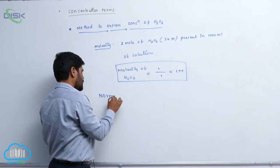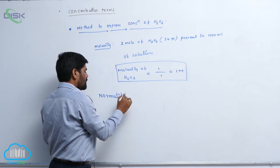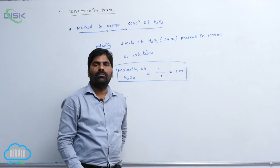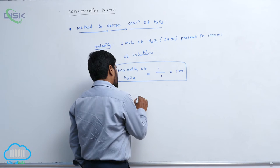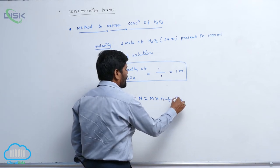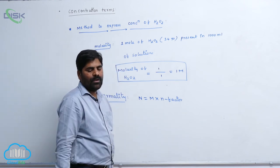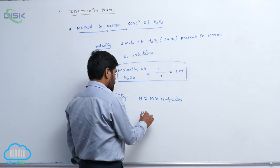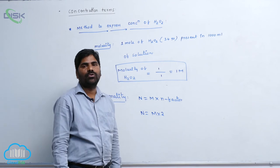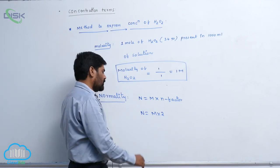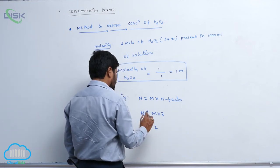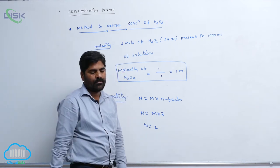The next one is normality. Normality equals molarity multiplied by the n-factor. As calculated earlier, the n-factor of hydrogen peroxide is 2 — that is 34 divided by 2. So normality equals molarity (which is 1) multiplied by n-factor (which is 2), giving us 2.